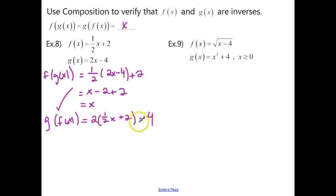And in this case, we're going to need to distribute that 2. So 2 times a half cancels, and we're left with x. And then 2 times 2 is 4 minus 4. 4 minus 4 is 0, so we're left with x. And this one also works.